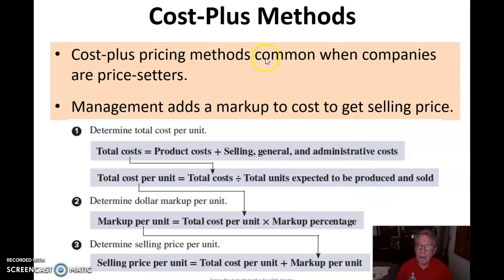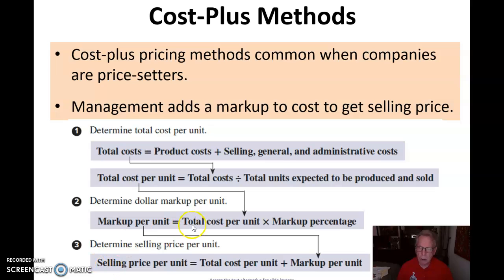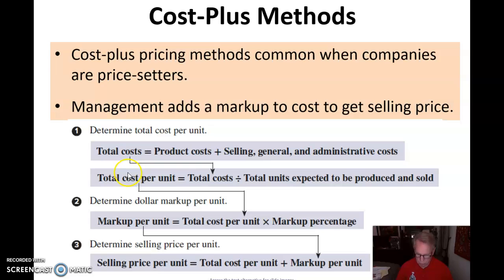For cost-plus methods when we're a price setter, management wants to add a markup to the cost to get a selling price. Those costs are our product costs plus our selling, general, and administrative costs. The total cost per unit is total cost divided by the total number of units expected to be produced and sold. Then we determine the markup percentage we want, take the total cost per unit, and mark it up by that percentage to determine our selling price per unit.